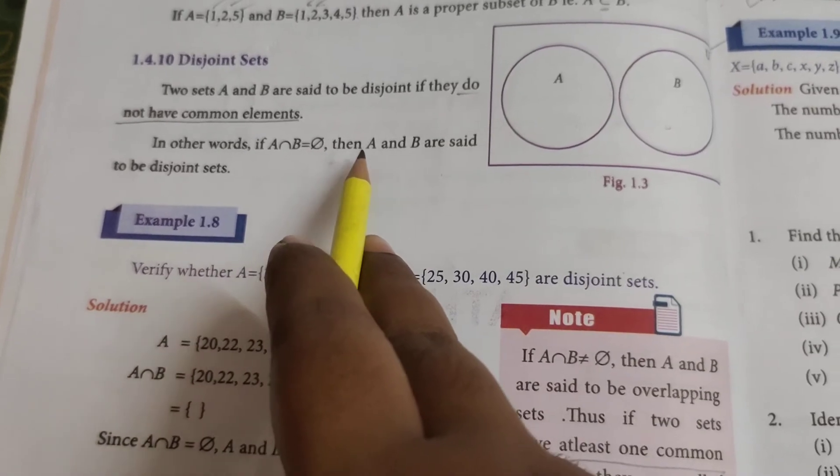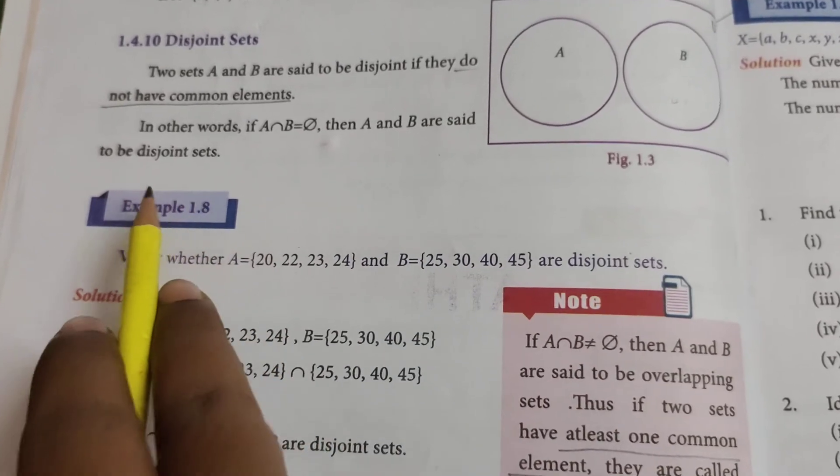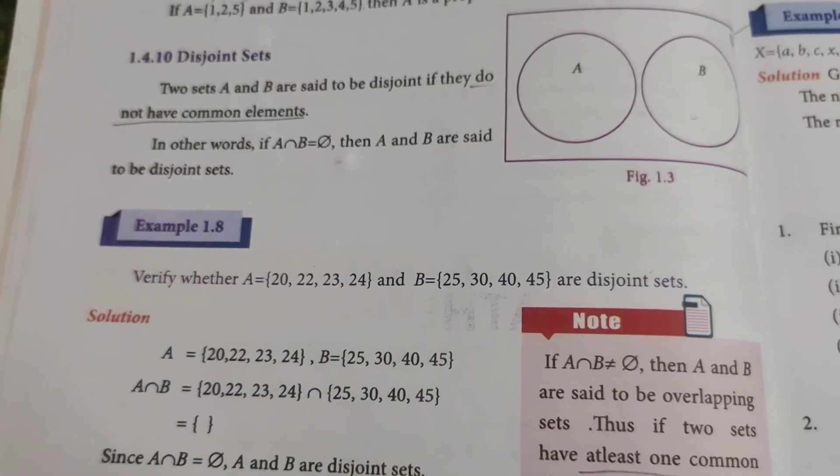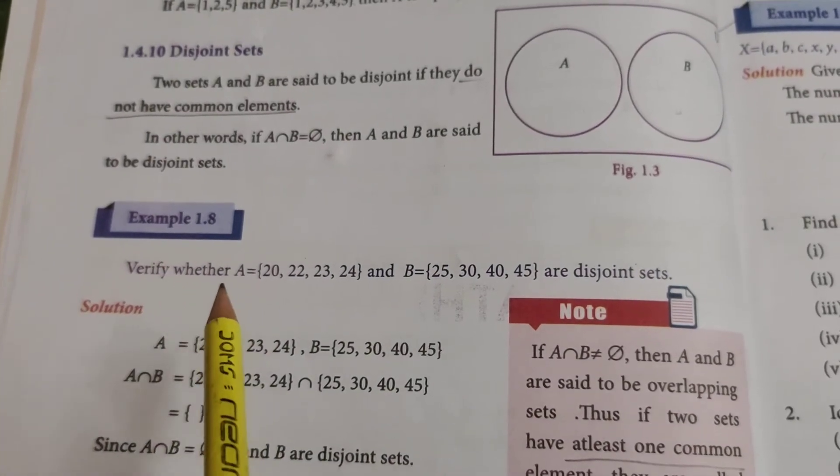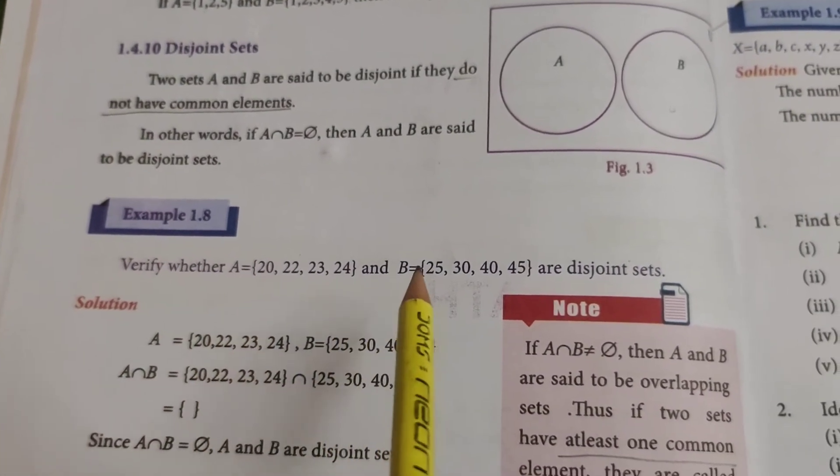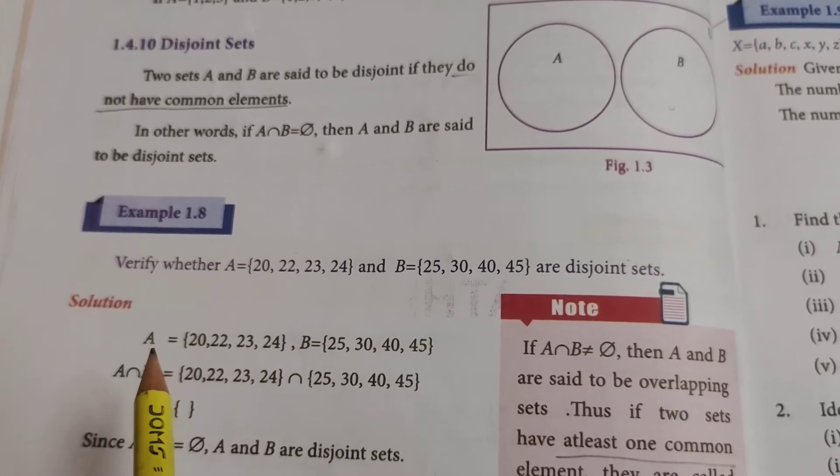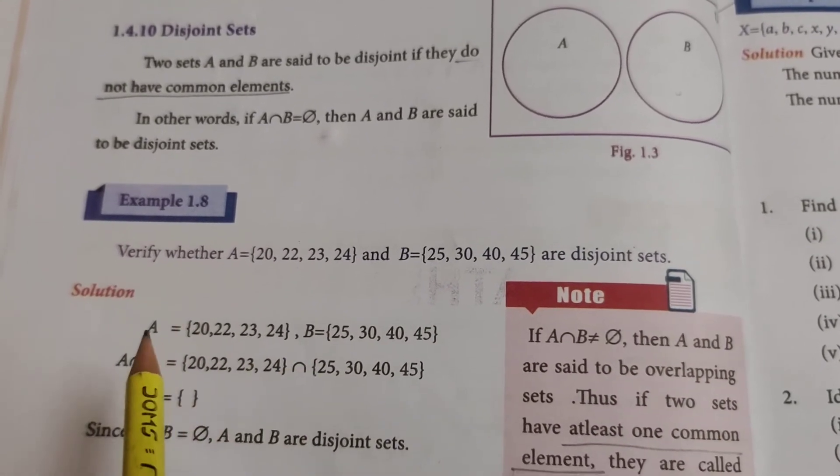See the example: verify whether A and B are disjoint sets. First, we have to write A and B as it is. A equals the set {20, 22, 23, 24}, then B equals the set {25, 30, 40, and 45}.